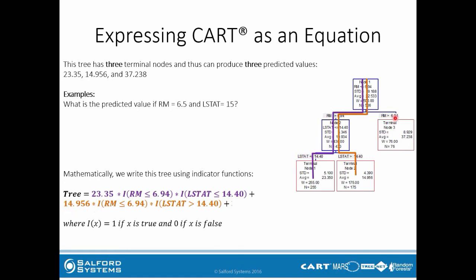Finally, for terminal node 3, the path from the root node is defined by only one condition. The predicted value is 37.238 multiplied by the appropriate indicator, which in this case is just RM greater than 6.94.